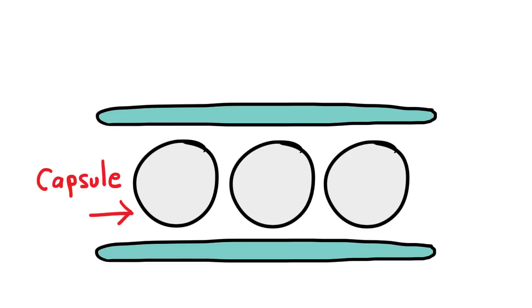It works by squeezing lots of capsules between two electrodes. Each capsule has positively charged white pigments and negatively charged black pigments.